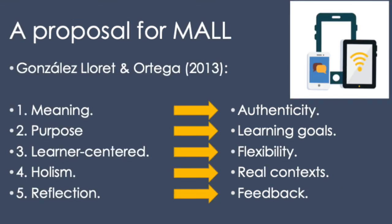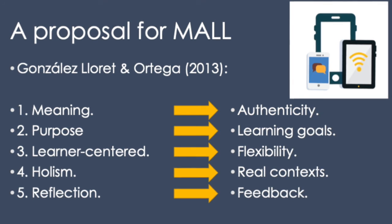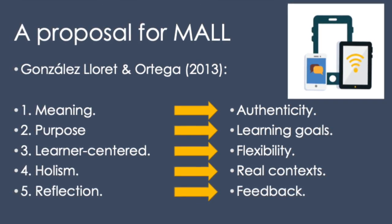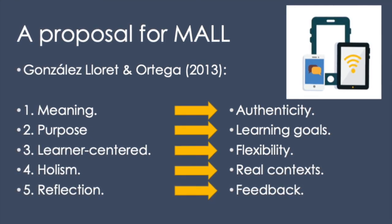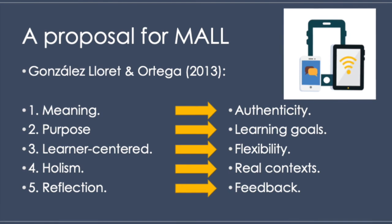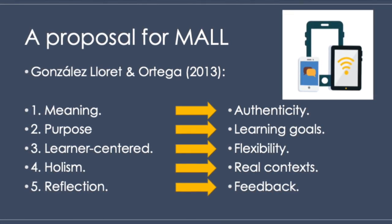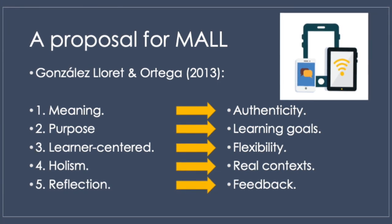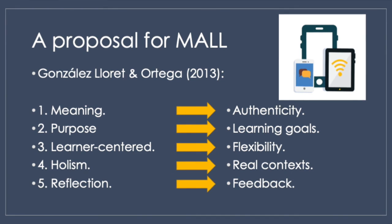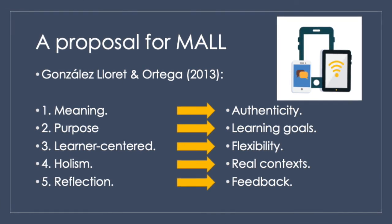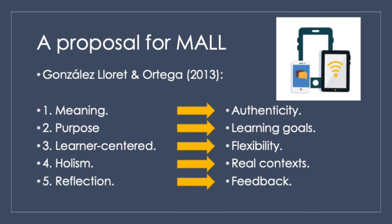González and Ortega came up with a proposal for MALL implementations, proposing five aspects when implementing MALL tasks. Number one: if you focus on meaning, you get high levels of authenticity and negotiation of meaning. Number two: with a communicative purpose or outcome, you can have relevance on learning goals. Number three: if the task is learner-centered, there is greater flexibility and choice for learners. Number four: holism consists of real-world language integrating form, function, and meaning, representing more dynamic and real communication contexts. Number five: reflection of meaning activates high-order learning, and with this there is mediated feedback on authentic communicative situations.